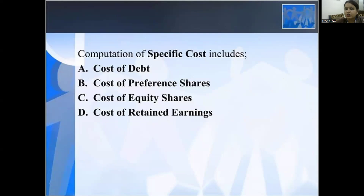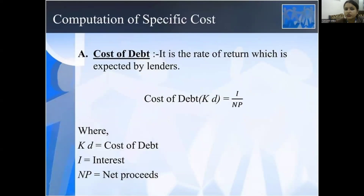The computations of specific cost include cost of debt, cost of preference shares, cost of equity shares, and cost of retained earnings. In this video, we will discuss the cost of debt and cost of equity shares. Cost of debt: it is the rate of return expected by the lenders. KD is the cost of debentures and is calculated as I divided by NP, where KD is the cost of debt, I is the interest, and NP is the net proceeds.